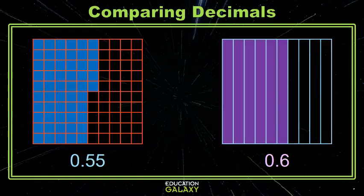Let's try another. On the left, I have the decimal 55 hundredths, and on the right, I have the decimal six tenths. Well, 55 seems bigger than six, but I can tell that more of the right side grid is shaded. So what's going on there?